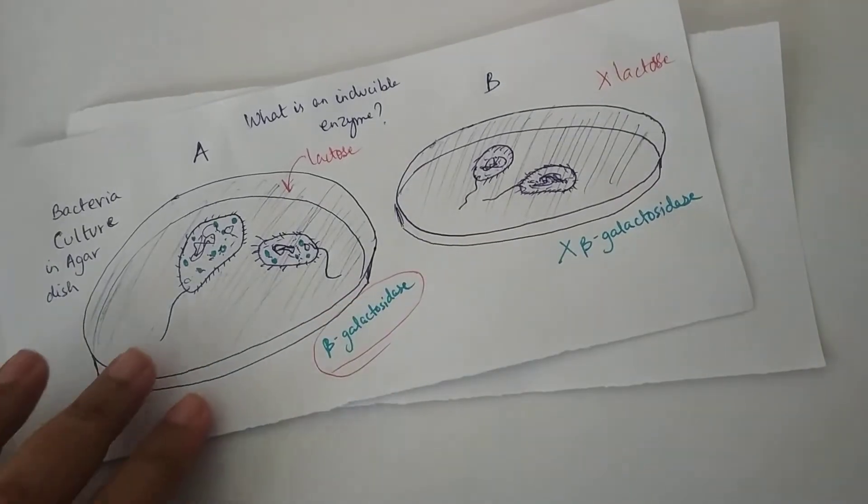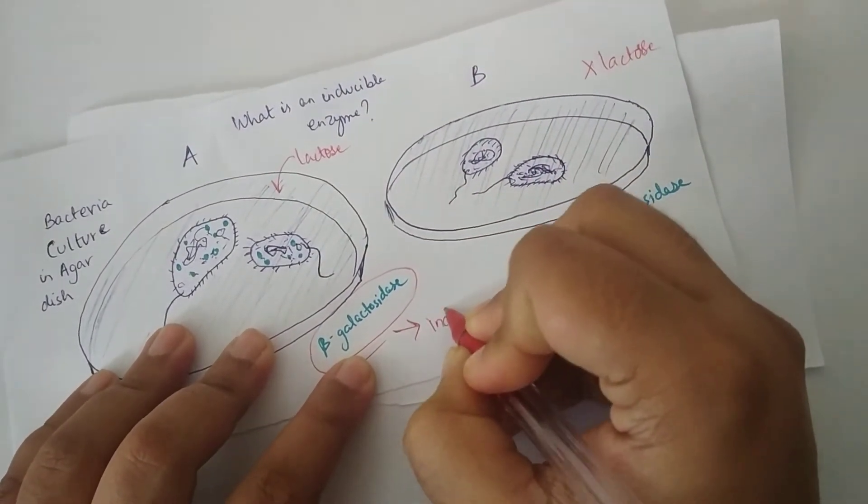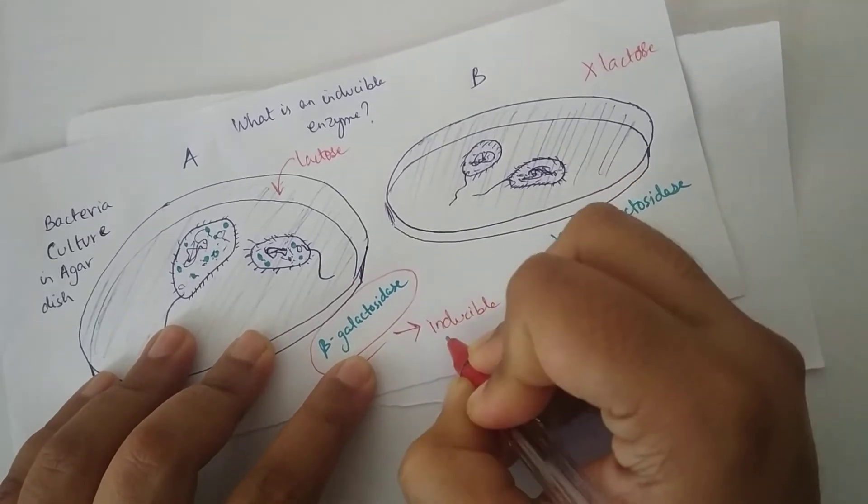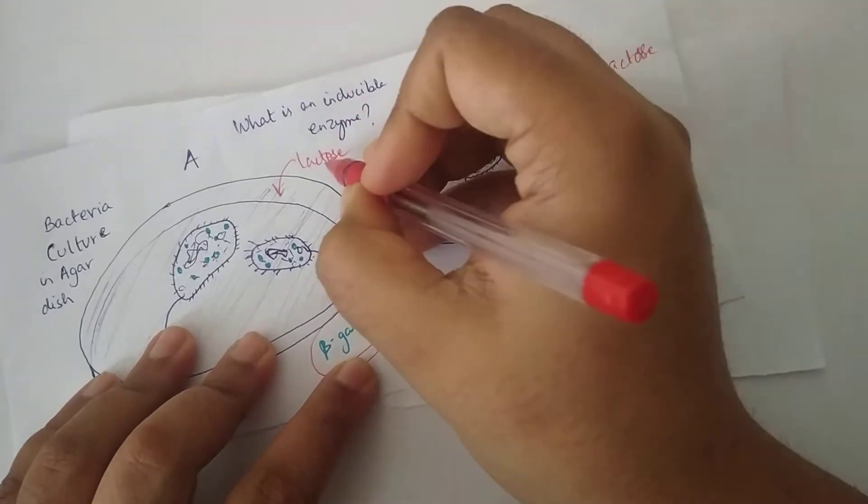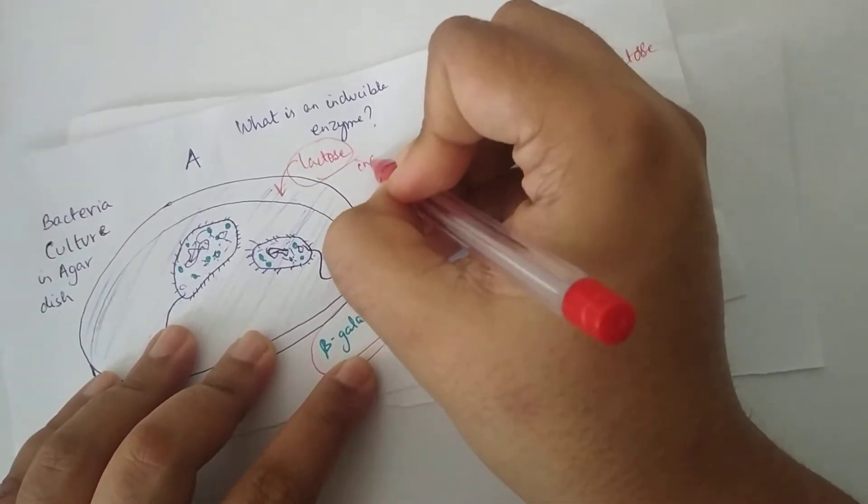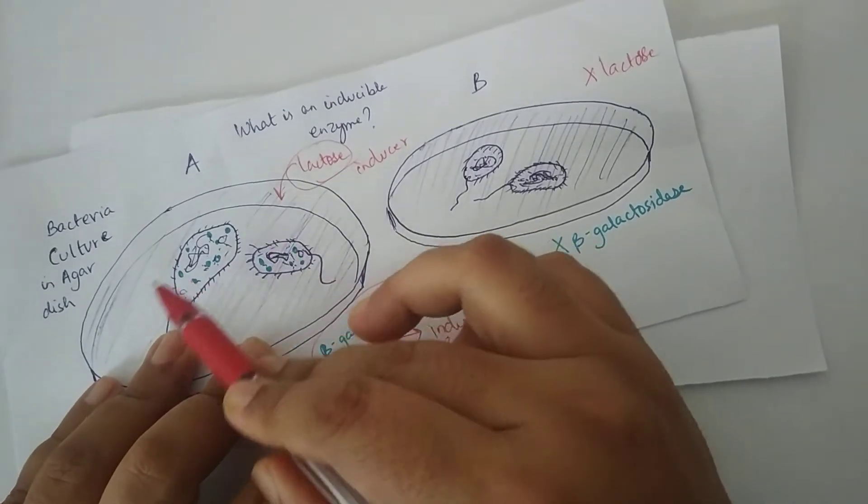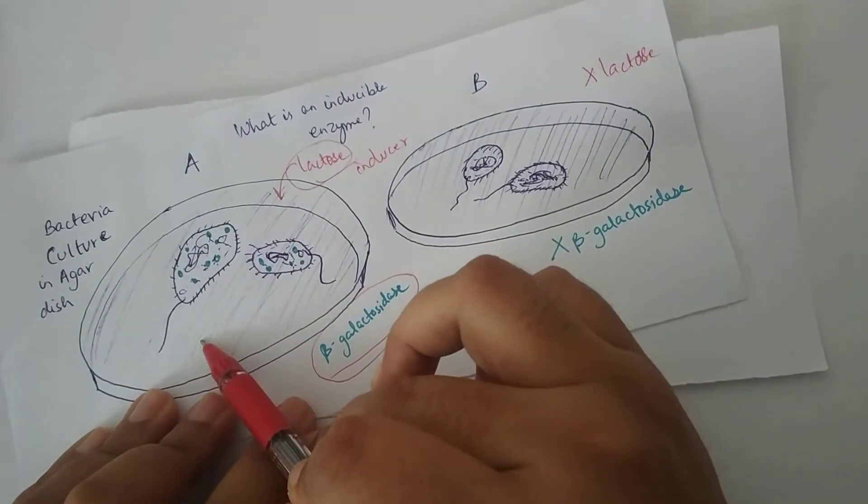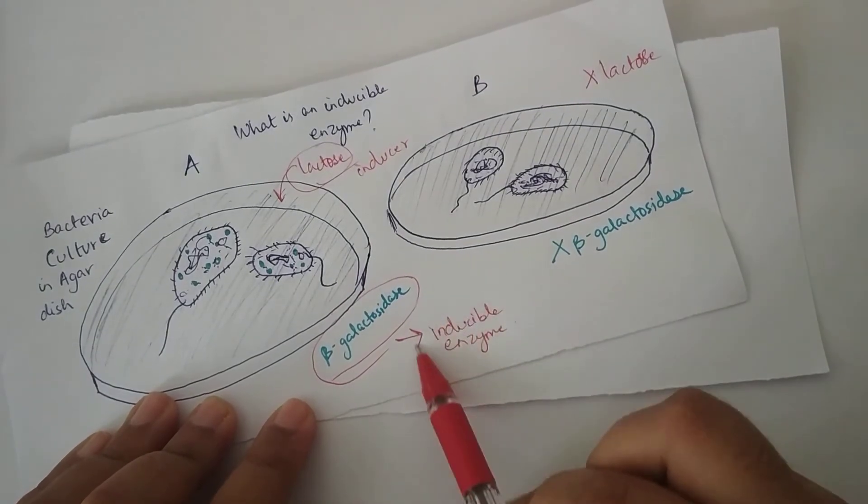So this beta galactosidase enzyme is an example of an inducible enzyme. Why am I calling it an inducible enzyme? Because this lactose is my inducer. When this inducer is present in the environment then the living organism will produce this enzyme. So this is an inducible enzyme.